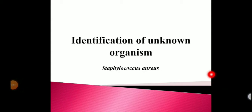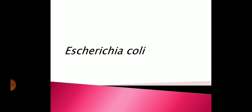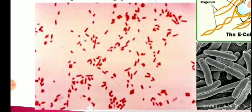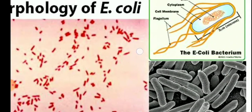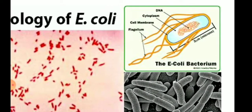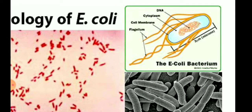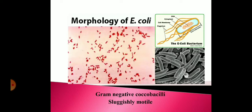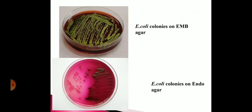Good afternoon students. Last time we discussed the identification of E. coli. When we studied it, we found that the morphology of the organism is gram-negative coccobacilli and sluggishly motile. Under the microscope it appears as gram-negative short rods arranged singly or as coccobacilli. The organism has peritrichous flagella, so it is motile.